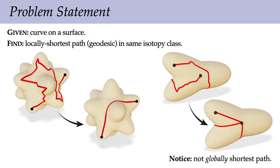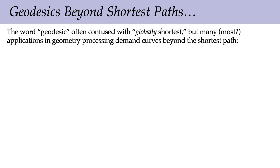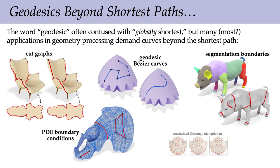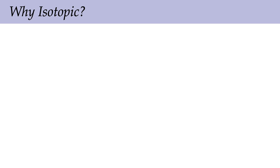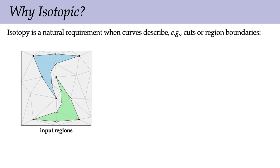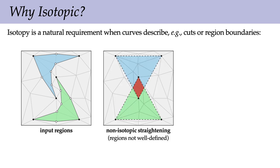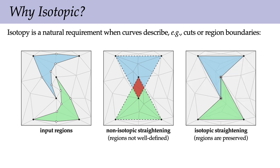We actually want to be able to find paths beyond just minimal geodesics. The word geodesic is quite often confused in geometry processing with the idea of a globally shortest path, but actually a lot of algorithms actually need paths that are not necessarily the shortest ones — anything from cutting and segmenting surfaces to building domains for finite element simulation. A way to motivate the isotopy condition is that many curves on surfaces define region boundaries. If we naively straightened out paths without isotopy constraints, we'd end up with curves that don't clearly delineate regions anymore. Whereas if you stay in the same isotopy class, the partition is still meaningful.